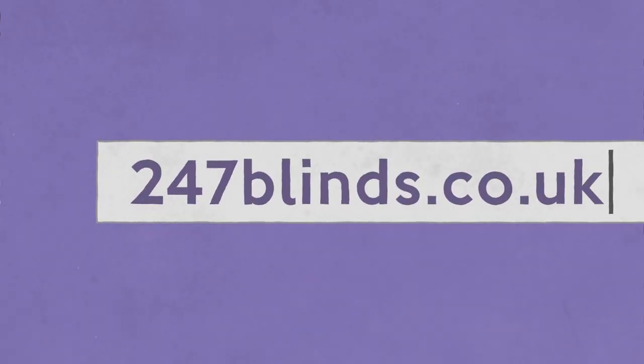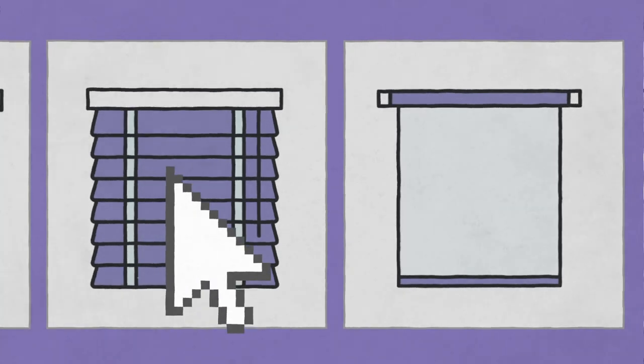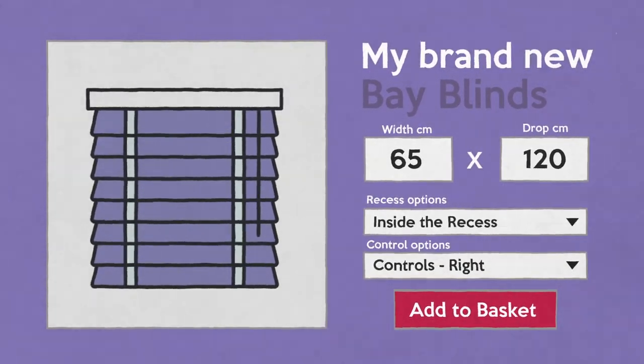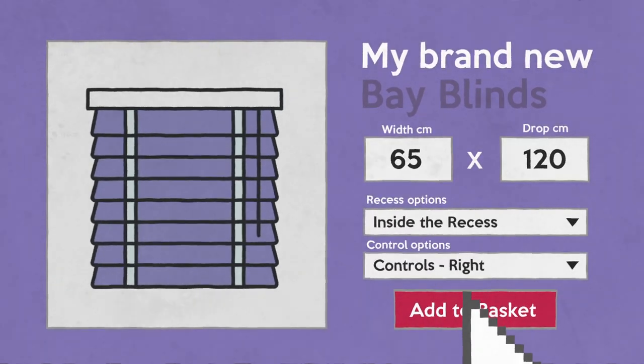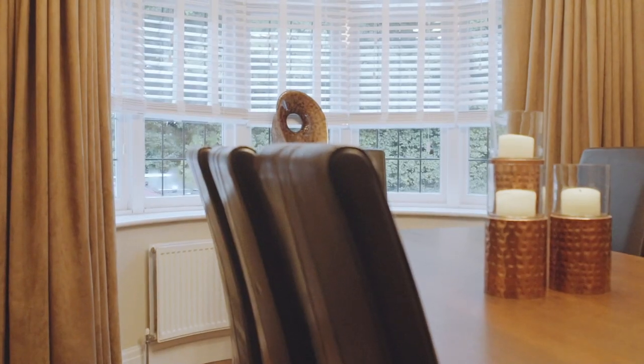All that's left to do is to head over to the website, select your choice of blind from our wide range of styles and colors and enter in your measurements. And don't forget to take a note on which side you would like the blind's control cords to be on. And you're all set, in no time at all you could have a bay window in your home that looks as good as this one.